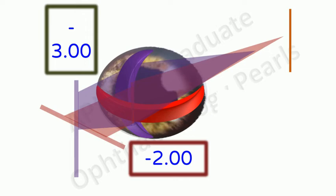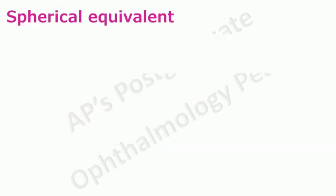So in this particular example the power in the horizontal meridian is minus 2 diopters and that of the vertical meridian is minus 3 diopters. This is represented on the power cross in this manner.